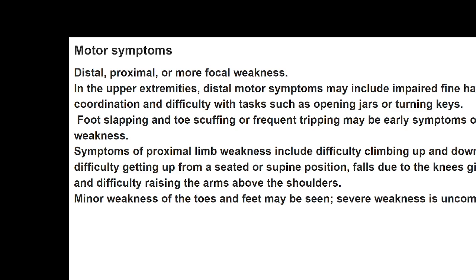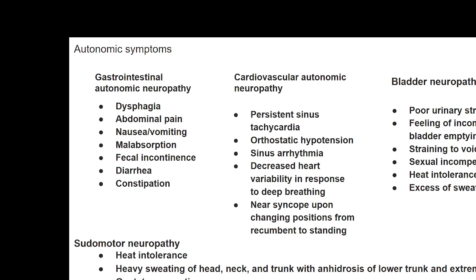Autonomic symptoms are classified into: gastrointestinal autonomic neuropathy — presenting with dysphagia, abdominal pain, nausea, malabsorption, fecal incontinence, diarrhea, or constipation; cardiovascular autonomic neuropathy — presenting with sinus tachycardia, orthostatic hypotension, or arrhythmias; and bladder neuropathy. Gastrointestinal autonomic neuropathy is often misinterpreted as gastritis and not given sufficient attention.